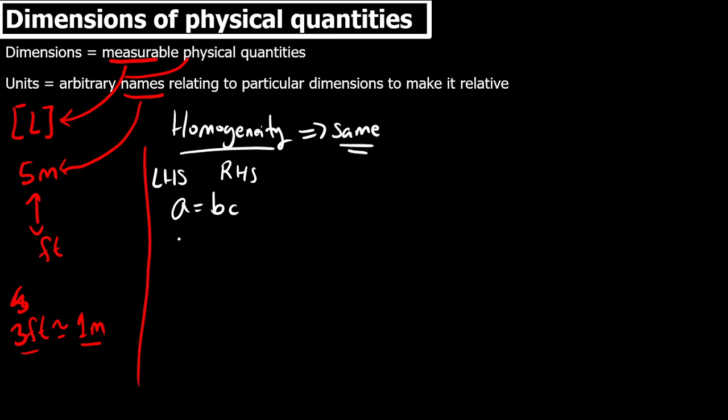Say you have an equation, and assuming that you don't know this equation. So say you have the equation F equals to G m1 m2 over r squared.